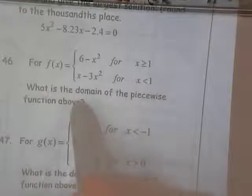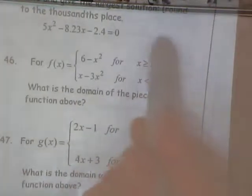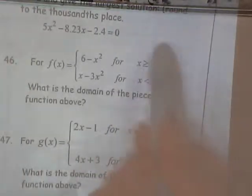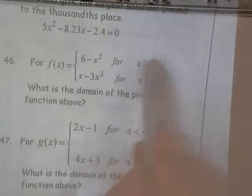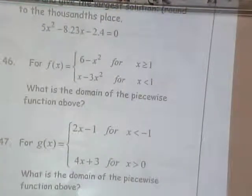To find your domain of piecewise functions, it's always right here. So what x values are represented if I'm looking at x greater than or equal to one and x less than one? What values does that cover?